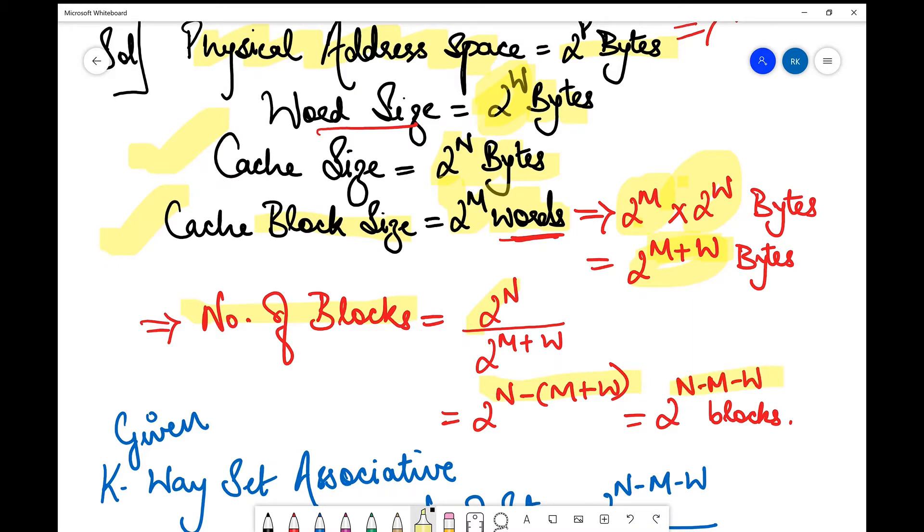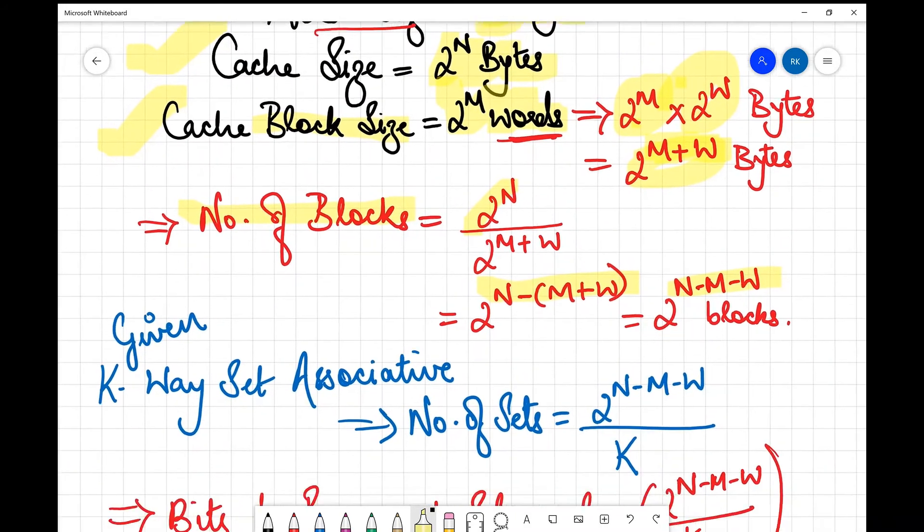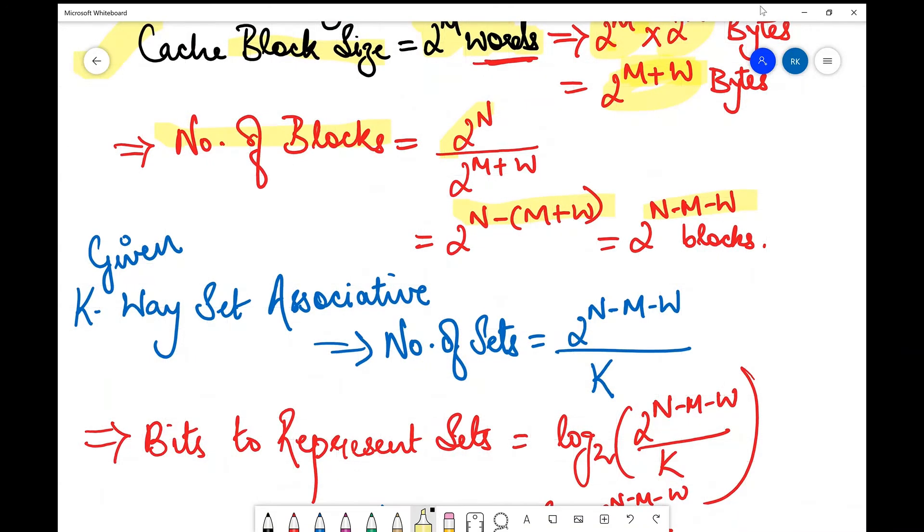It is also given that it is a k-way set associative memory. Since it is k-way set associative, the number of sets is total number of blocks upon k. So number of sets is 2^(n-m-w) upon k. Therefore, bits required to represent these sets will be log₂ of this entire expression.